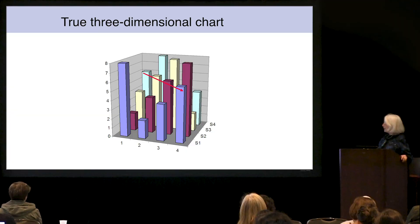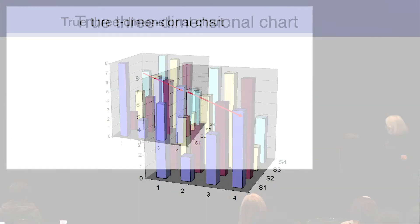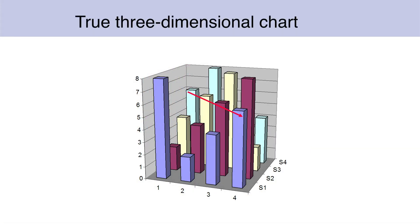I'm here this afternoon to discuss how to avoid some common graphical mistakes. Here we have the one, two, three, four. We have the row, the column, and these three things that I've called S1, S2, S3, S4.